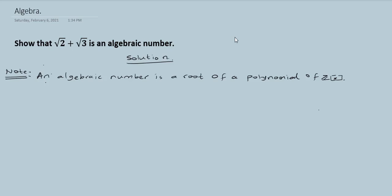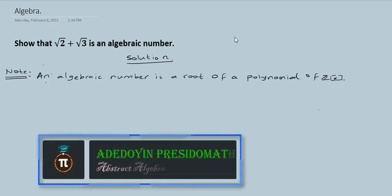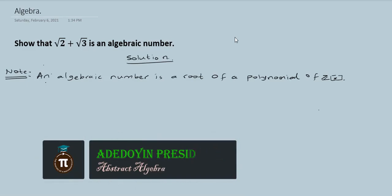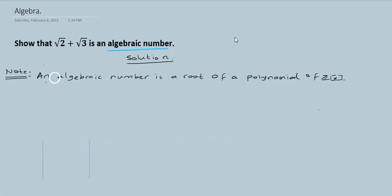We want to show that root 2 plus root 3 is an algebraic number. The first thing you need to ask yourself is what is an algebraic number. If you know the meaning of an algebraic number, then you are good to go. So I have to give you the definition first.